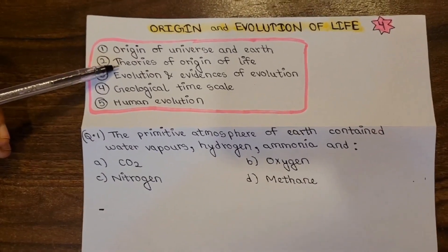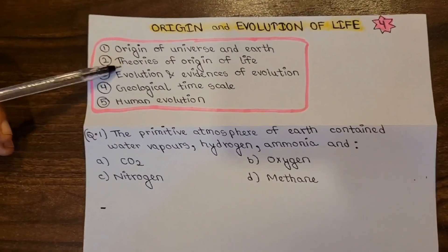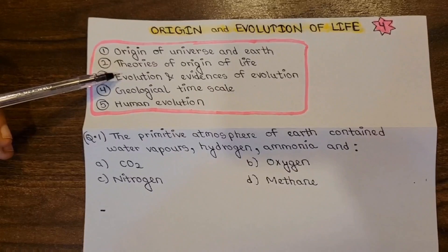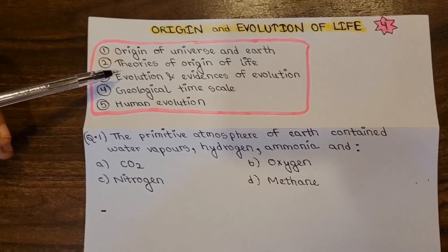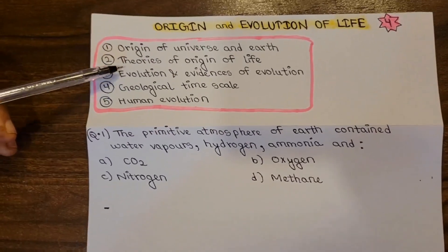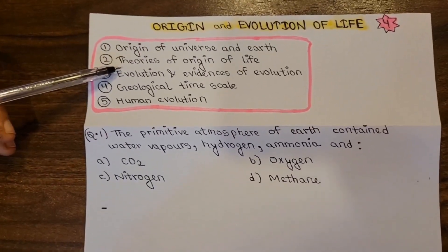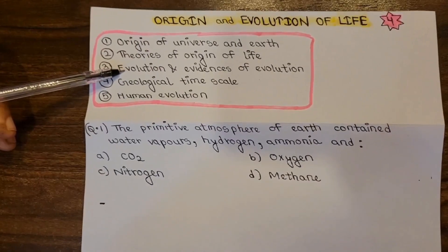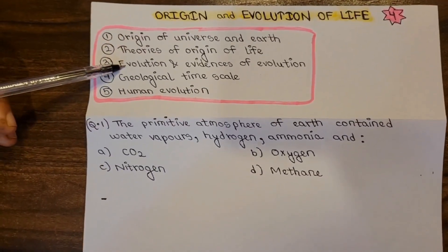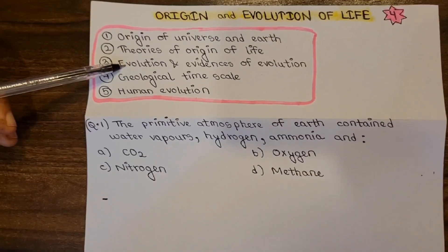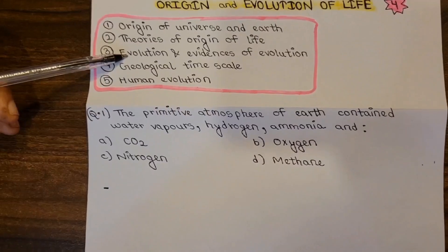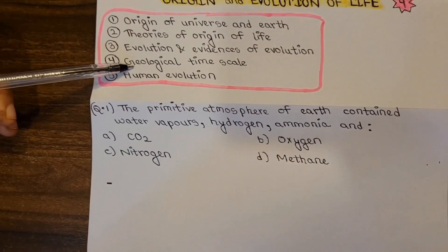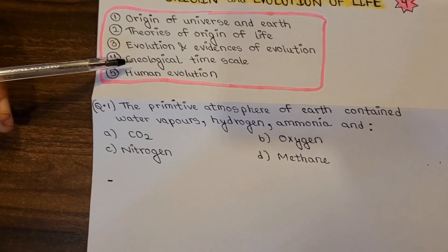Then we have Oparin's theory, which is very important. We also cover Lamarck's theory, Darwin's theory, and Neo-Darwinism. Important experiments include Redi's experiment, Pasteur's experiment, and Miller and Urey's experiment — these are frequently asked in exams. Then evolution and evidences of evolution: homologous organs, analogous organs, vestigial organs, connecting links, embryology, and paleontology.